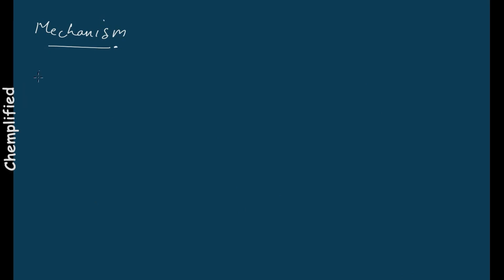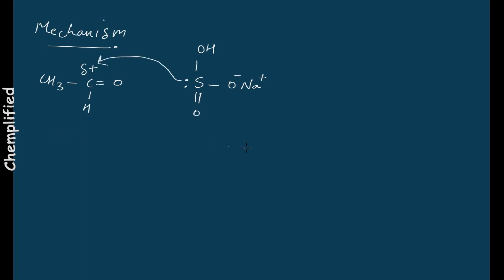Let the starting molecule be an aldehyde. This is your aldehyde. Now, the bisulfite is going to react. The carbonyl carbon is delta positive — the nucleophile will attack the carbonyl carbon, and you will get an intermediate: CH3C with O negative.